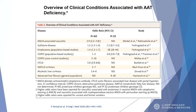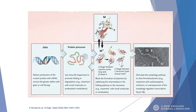A deficiency of alpha-1 antitrypsin can cause unopposed damage to tissues and emphysema. Clinical conditions associated include ANCA-associated vasculitis, gallstones, emphysema, and liver disease. Possible treatment strategies include reducing production of the mutant protein with RNA interference, correcting the genetic defect with gene or cell therapy, using chaperones within the endoplasmic reticulum to promote folding or degradation, blocking polymer formation by stabilizing monomers in the folding pathway, or stimulating autophagy to clear formed polymers.